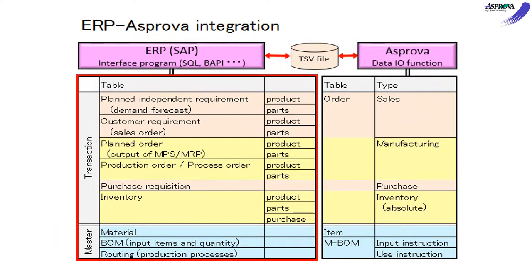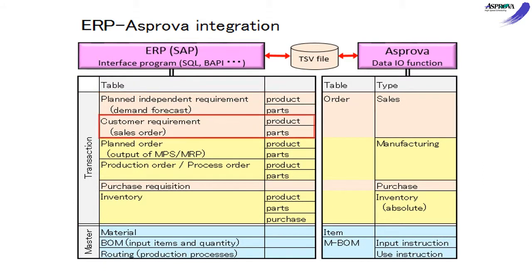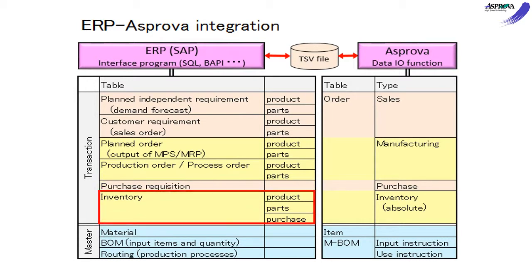There are several data tables in ERP, such as Planned Independent Requirement, Customer Requirement, Planned Order, Production Order or Process Order, Purchase Requisition, and Inventory.